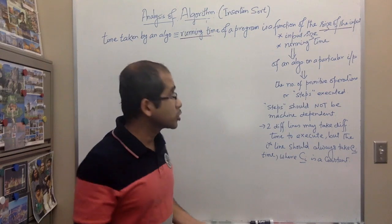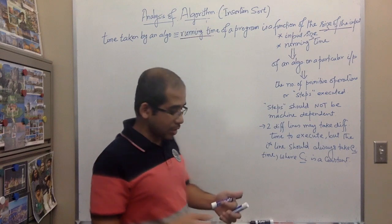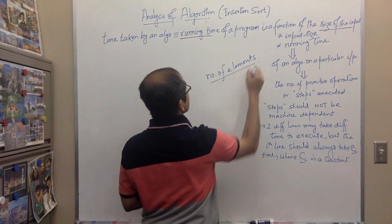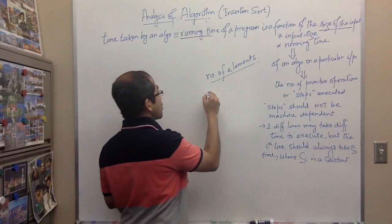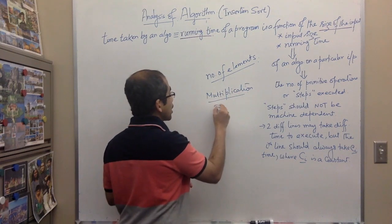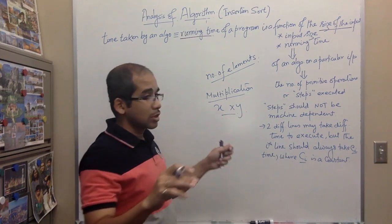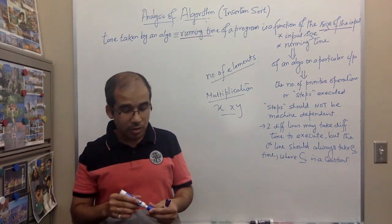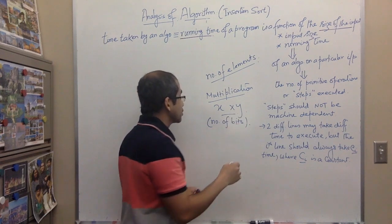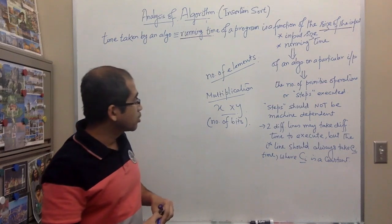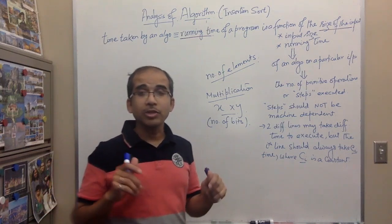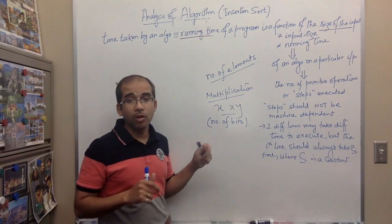The size of the input most of the time means the number of elements. However, for operations like multiplication, what matters is the combined bit value not exceeding the word size, so the number of bits is an important factor. The size of the input can therefore be the number of elements or the number of bits, depending on the type of the problem.